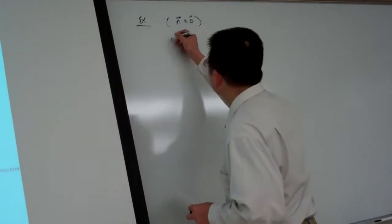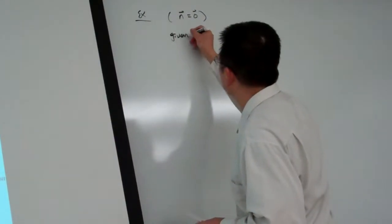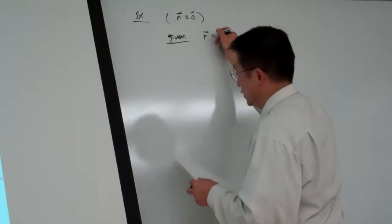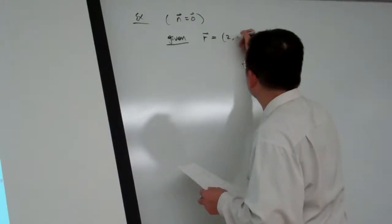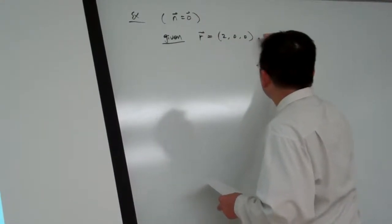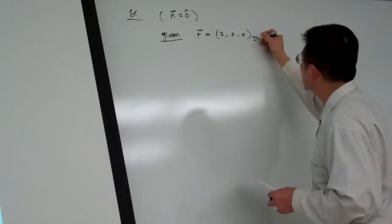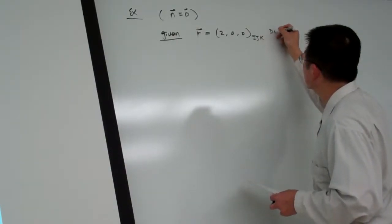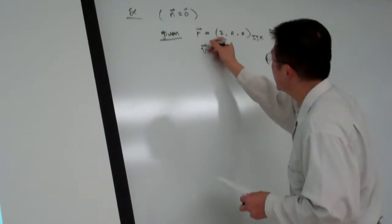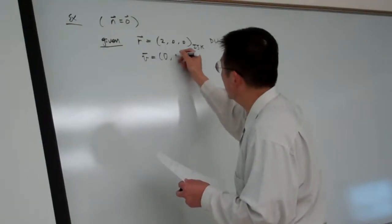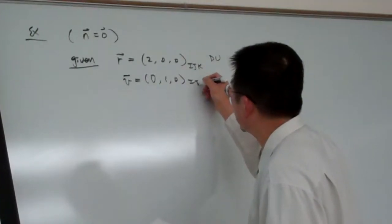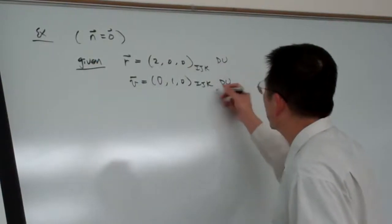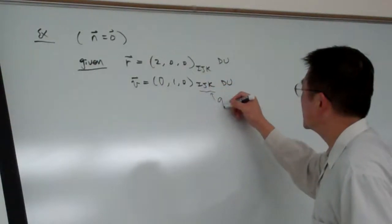Here we are given is r equal to 2, 0, 0. And in the IJK corner systems, and v equal to 0, 1, 0. And in IJK, okay, so basically here the IJK is the geocentric.